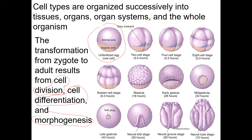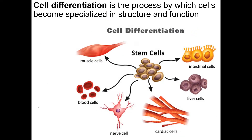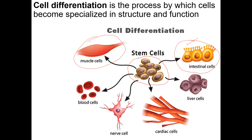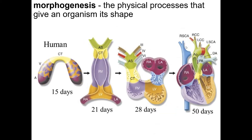Cell differentiation is the process by which cells become specialized in structure and function. Here we have some stem cells, which are undifferentiated cells. If they're embryonic stem cells, they can become all these different types of cells. The muscle cells and the intestinal cells all have exactly the same DNA, but you turn on certain genes in the intestinal cells that you don't turn on in the muscle cells, and vice versa. That's cell differentiation — turning on certain genes and turning off other genes so cells express different genes.